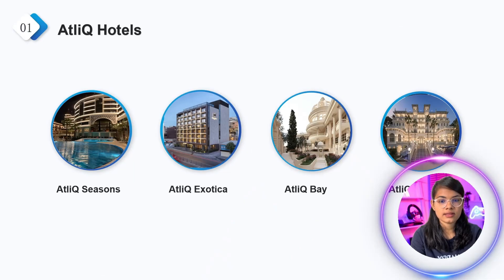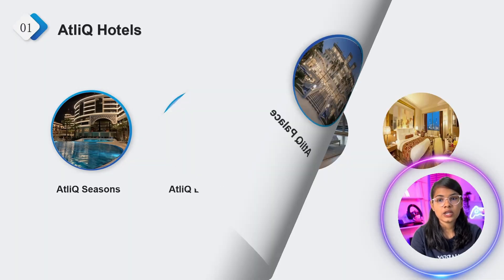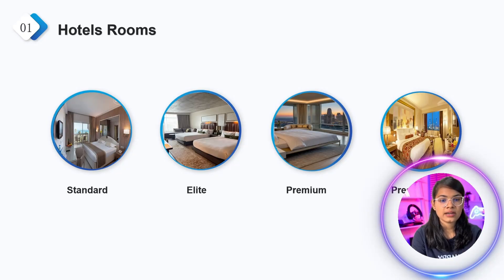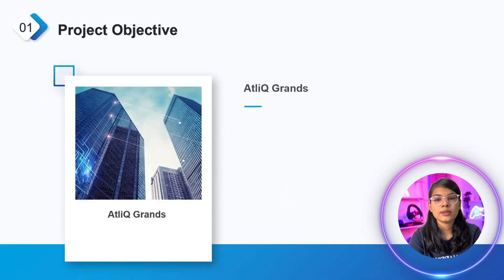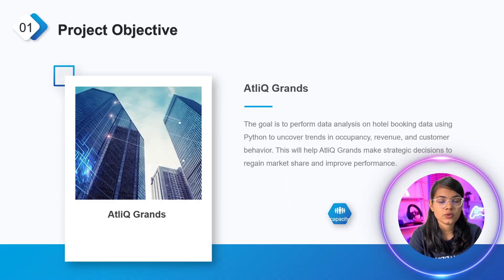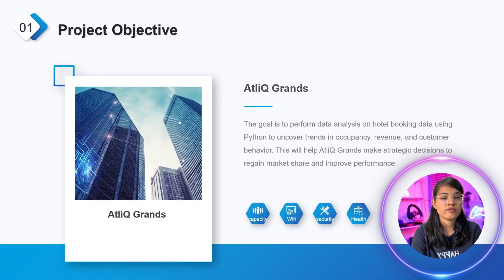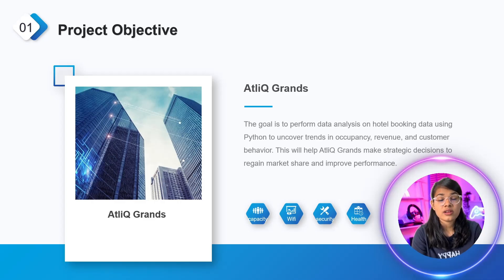These are the AtliQ hotels: AtliQ Seasons, AtliQ Exotica, and AtliQ Bay Palace. These AtliQ hotels have different room types: Standard, Deluxe, Premium, and Presidential. Now let's understand the project objective — the main goal is to look at the booking data, understand what was working and what's not, and suggest ways to help AtliQ Grand grow their business.